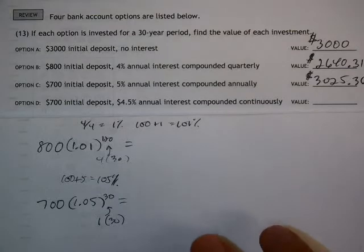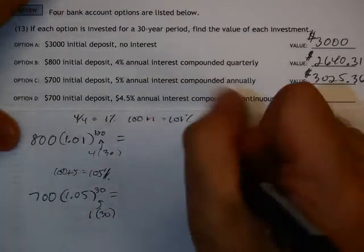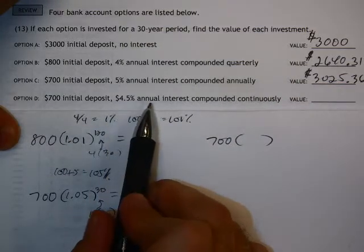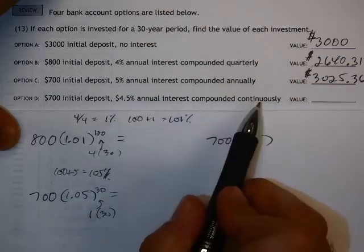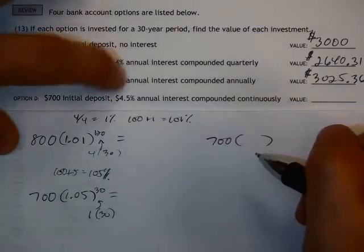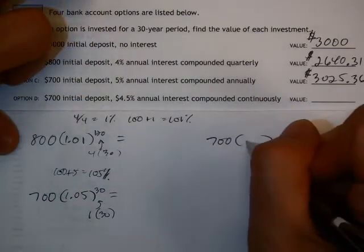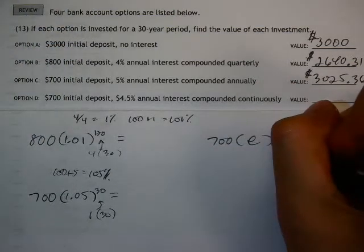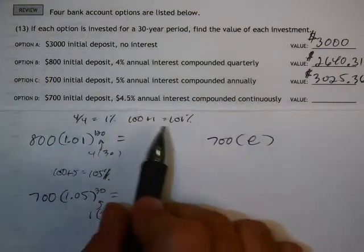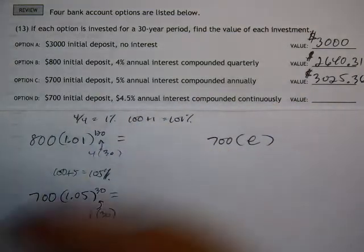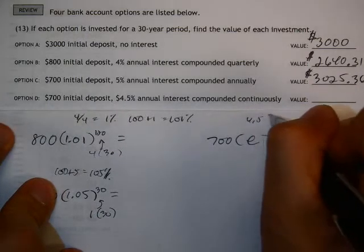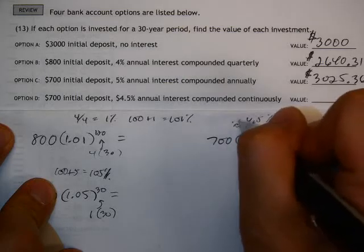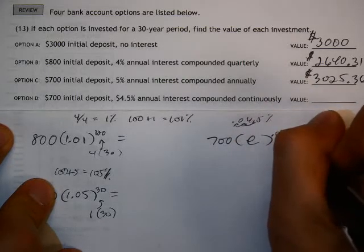Option D, $700 deposit with 4.5% annual interest compounded continuously. Now, continuously means that instead of using this percent as a multiplier, continuously means we have to use that constant E. The exponent that we use for the E is this percentage, but we don't have to worry about this 100%. It's just taking 4.5% and changing it to a decimal. So it's taking that decimal and moving it twice. So it's really 0.045.